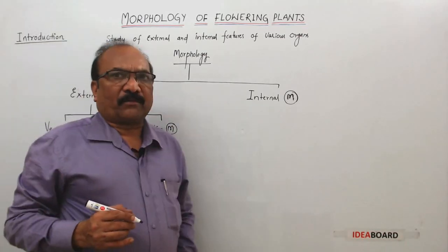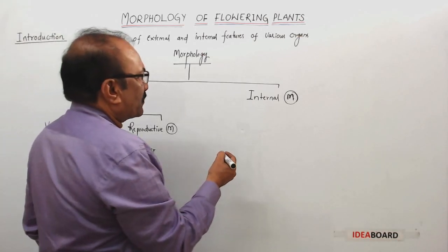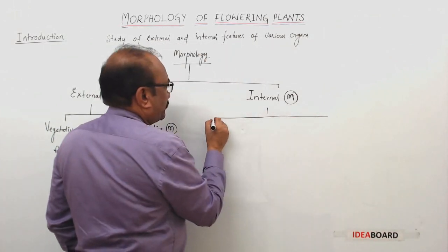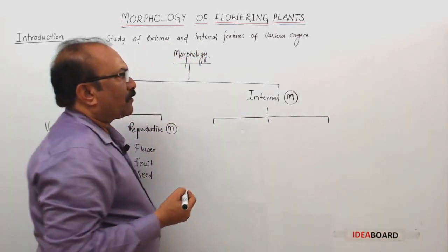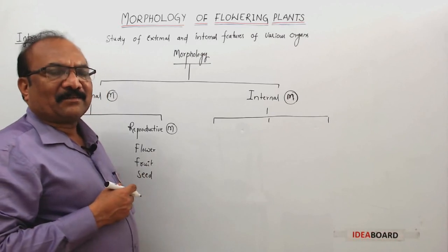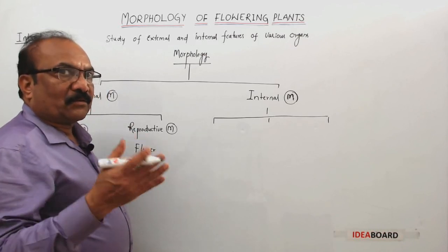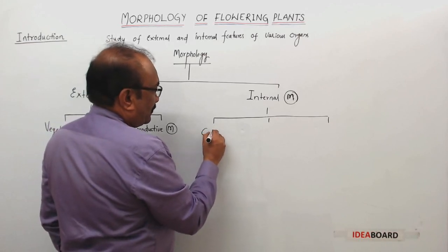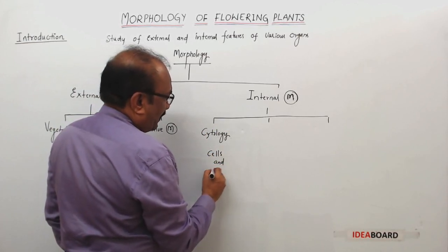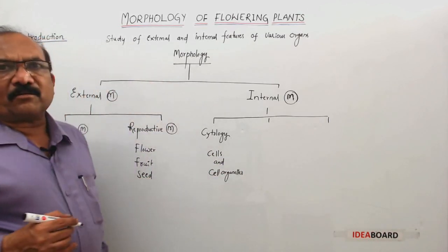Now let us come to internal morphology. This is the study of internal features of various organs, and it is further divided into three. When we study internal structure, you will find some units — the unit of life. What is that unit of life? Cell. So that is called cytology — the study of cells and cell organelles. It is called cytology or cell biology.